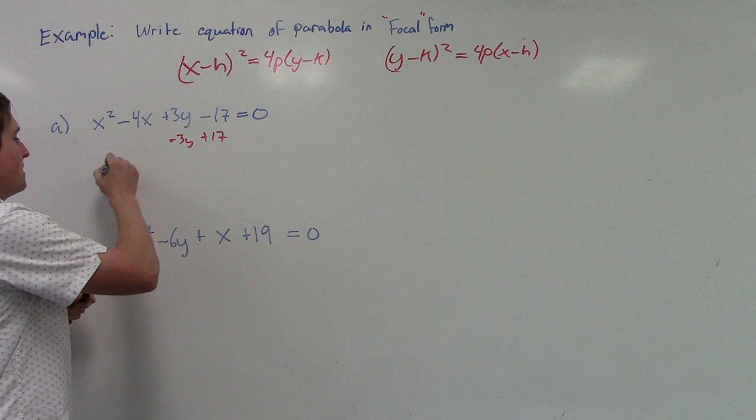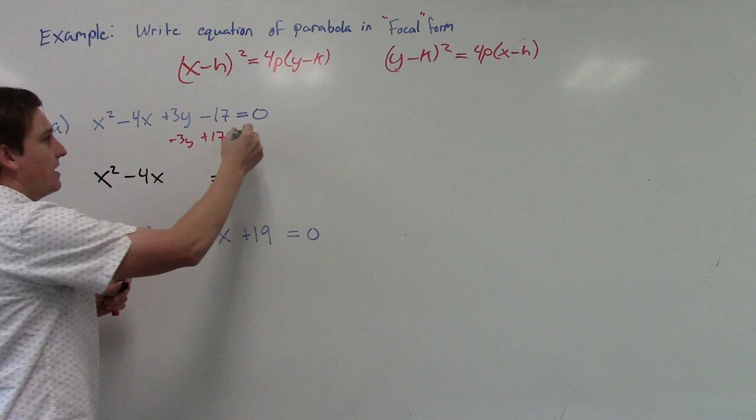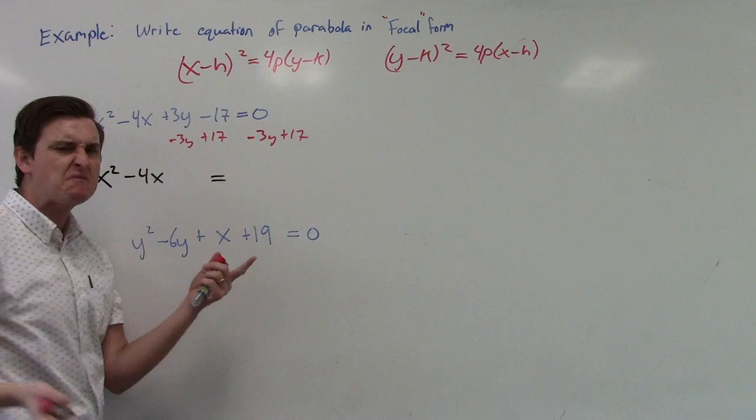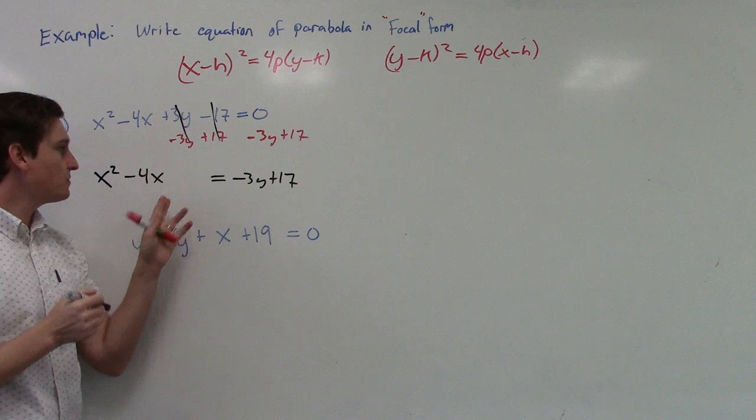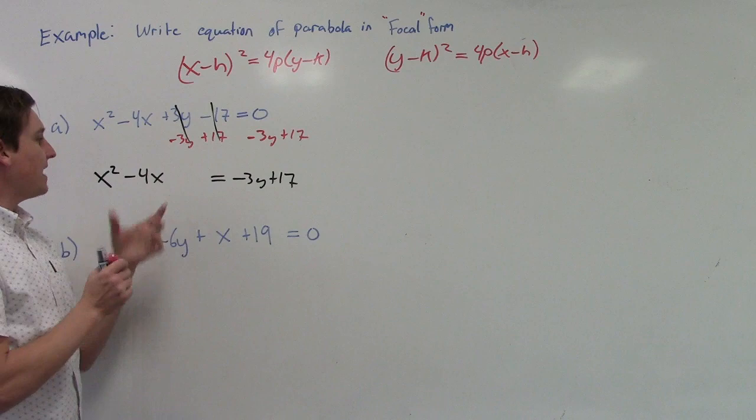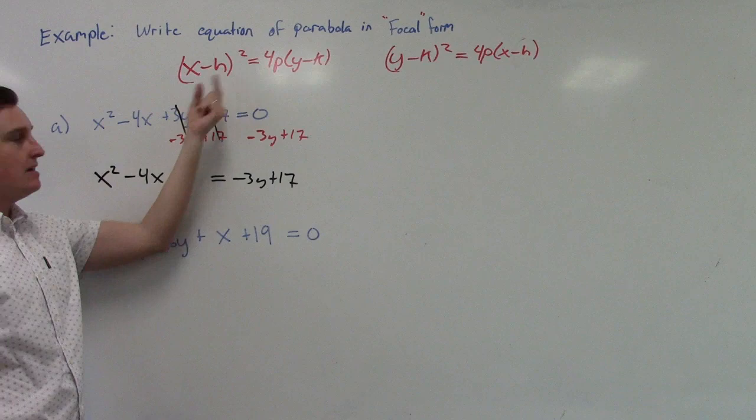That's going to give us x squared minus 4x on the left. On the right side we're going to have minus 3y plus 17 — we have to do this on both sides to keep it balanced. So on this side we're going to have minus 3y plus 17. Now the next thing we're going to do is complete the square. We've got to figure out what number goes here that's going to allow us to write this as a binomial squared — that's what we're looking for.